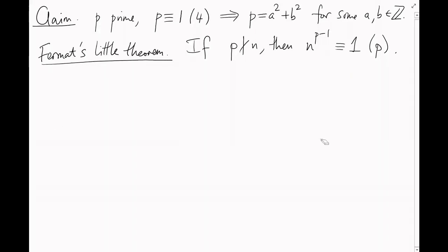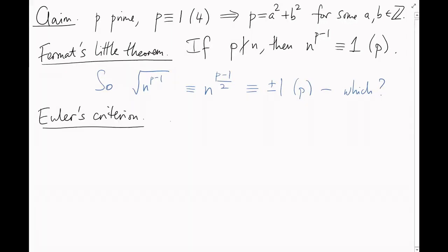So, if n to the (p-1) is 1 mod p, then its square root, n to the (p-1)/2, must be either plus or minus 1 mod p. Which is it? Well, that question is answered by Euler's criterion. n to the (p-1)/2 is 1 if n is a square mod p, that is, if there exists some l such that n is l squared mod p, and it's minus 1 otherwise.